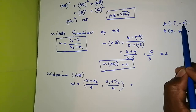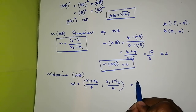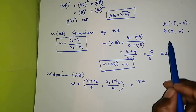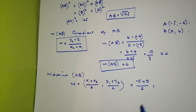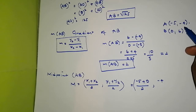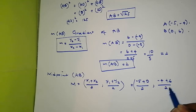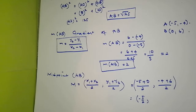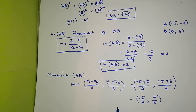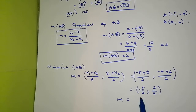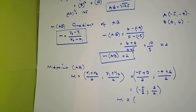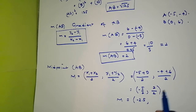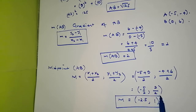A is X1 and Y1, B is X2 and Y2. The X coordinate is: negative 5 plus 0 divided by 2, which equals negative 5 over 2. The Y coordinate is: negative 4 plus 6 equals 2, divided by 2 equals 1. So the coordinates of our midpoint M equal negative 5 over 2 — you can also call it negative 2.5 — and 1.